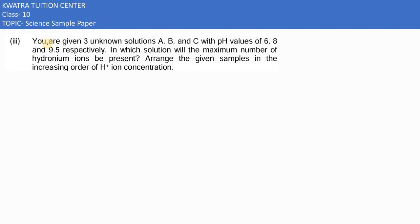In this case, the third part question 20 is there. You are given three unknown solutions A, B, and C with pH values of 6, 8, and 9.5 respectively. So A corresponds to pH 6, B corresponds to 8, and C corresponds to 9.5.